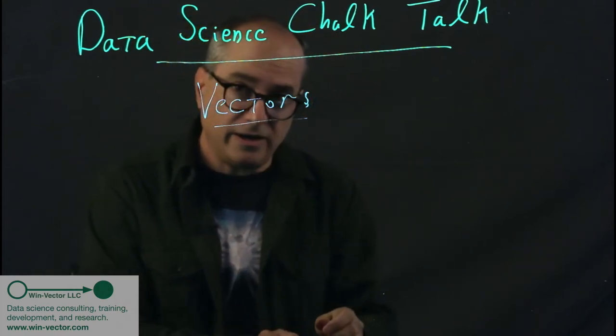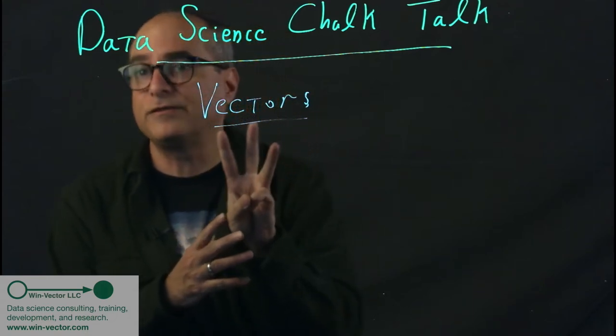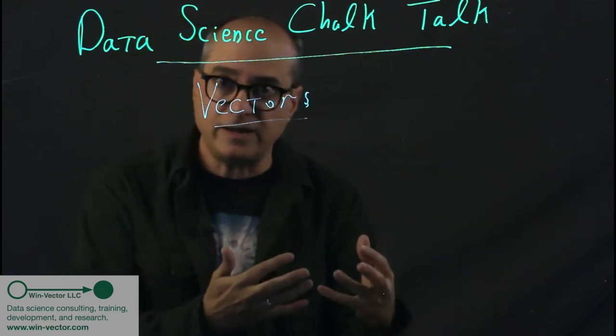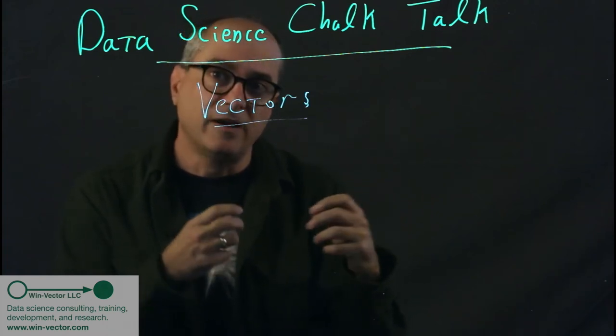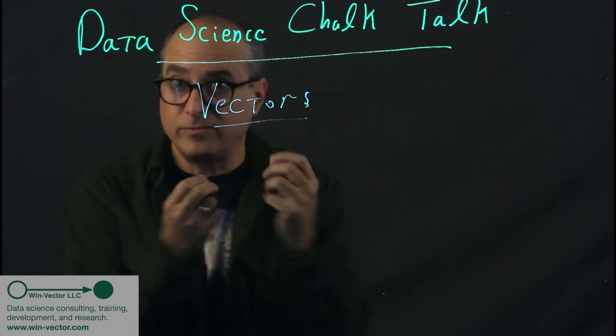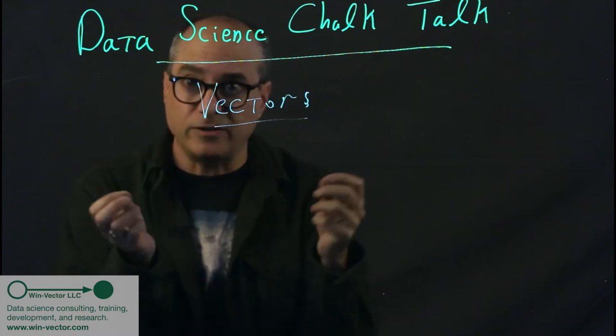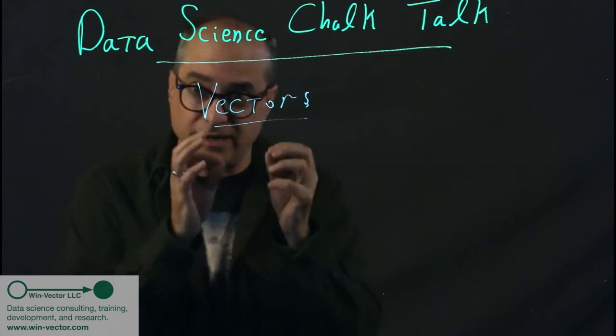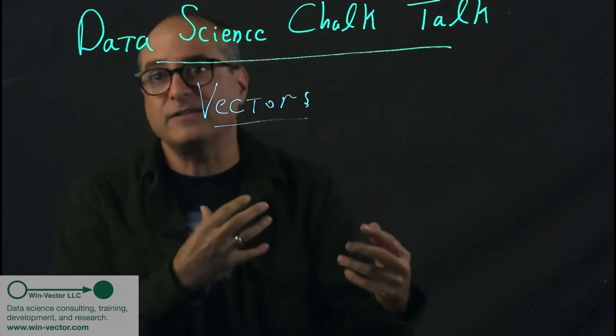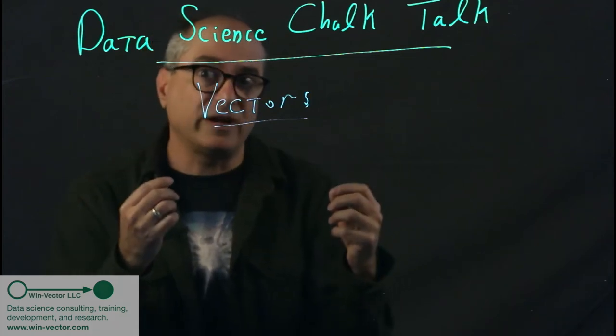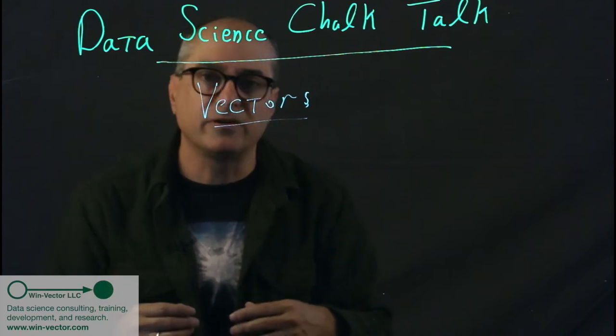There's at least three senses of vectors. There's the mathematical sense, where they're basically a displacement in possibly a high-dimensional space. There's the computer science sense, where they're merely an array of values indexed by an integer index. And then there's the data science sense, where there are values that we're very interested in, which is very close to the computer science sense.